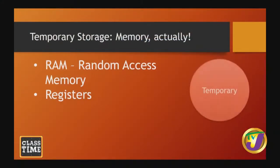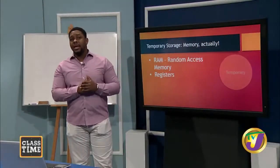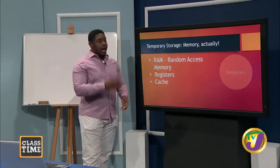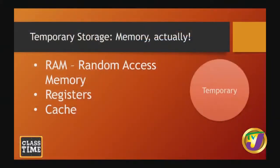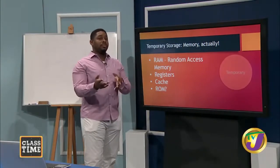Even though you might buy a CPU chip, there are other things inside it — including registers. We also have cache, which we looked at in three levels last week, and then we have RAM. There's a question mark beside RAM because when we talk about memory it's supposed to be temporary, which is what we've designed it for.